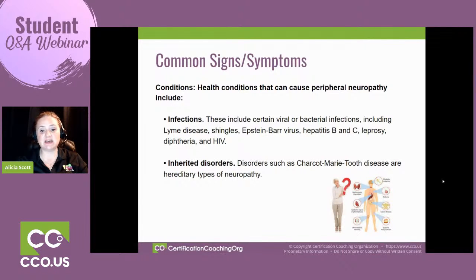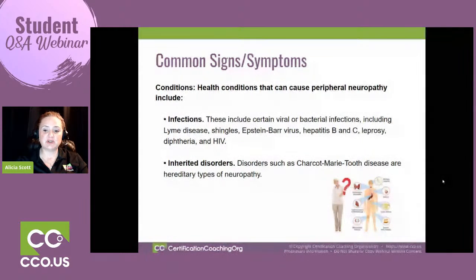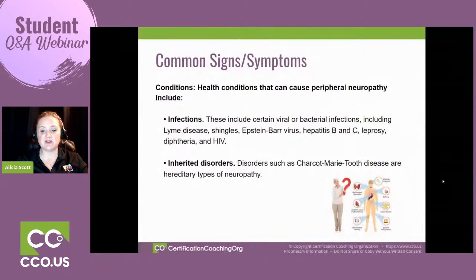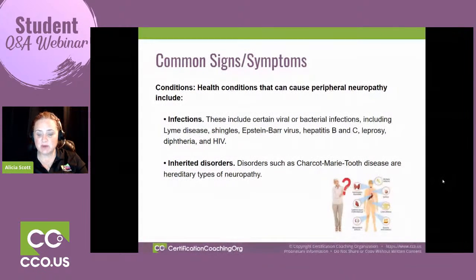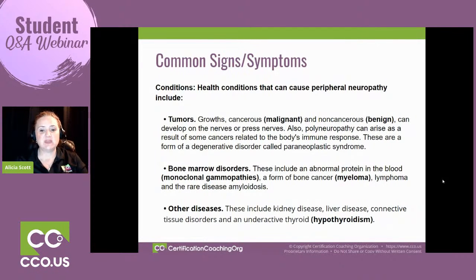Infections can also cause neuropathy: Epstein-Barr virus, hepatitis, leprosy, diphtheria, and HIV — which is an autoimmune disorder caused by a virus. There are also inherited forms, like Charcot-Marie-Tooth disease, which is hereditary. Other associated autoimmune conditions include Hashimoto's, rheumatoid arthritis, multiple sclerosis, asthma, and celiac disease. Tumors — whether malignant or benign — can press on a nerve or be associated with the nerve itself. Bone cancers in particular like to develop in the vertebrae and can cause degenerative disc disease that leads to complications for the nervous system.